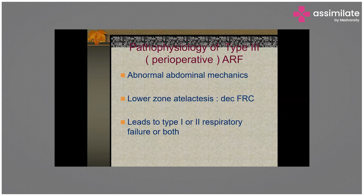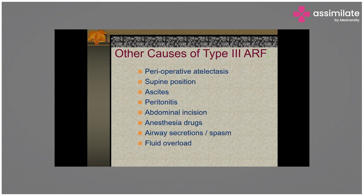With a large abdominal incision, abdominal and thoracic muscles cannot coordinate, causing discordance. Increased abdominal pressure compresses the lung bases, preventing them from contributing to oxygenation and ventilation. This causes lower zone atelectasis, which decreases functional residual capacity — the oxygen reserve in the lungs — leading to Type 3 respiratory failure. It is also seen with ascites, peritonitis, large abdominal incisions, fluid overload, and anesthesia-induced muscle fatigue.